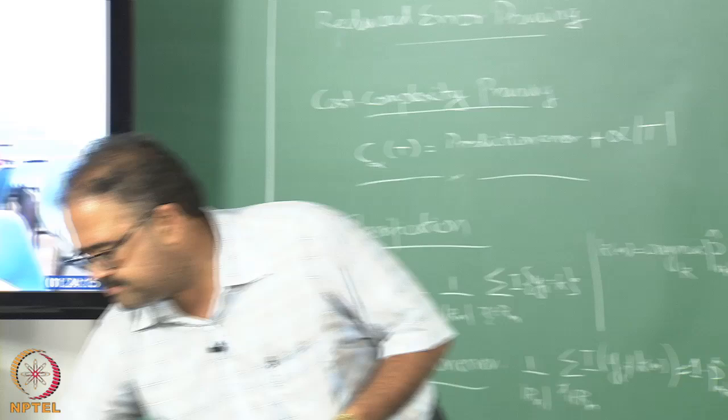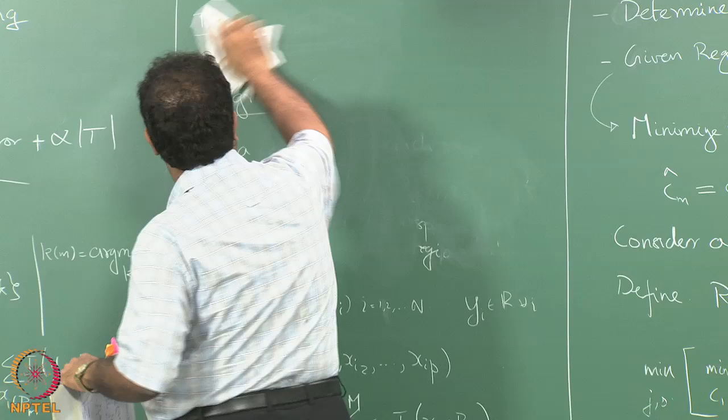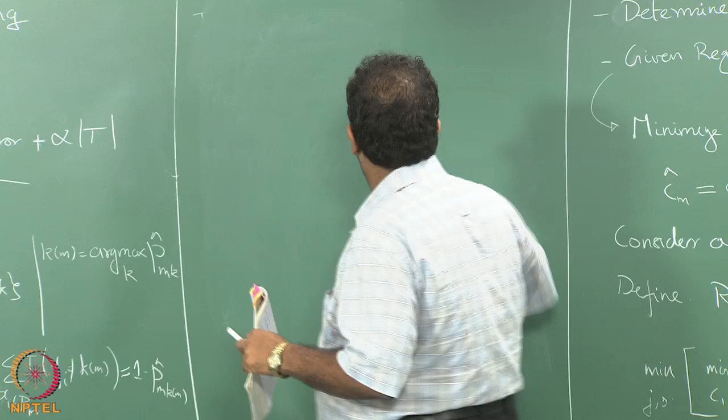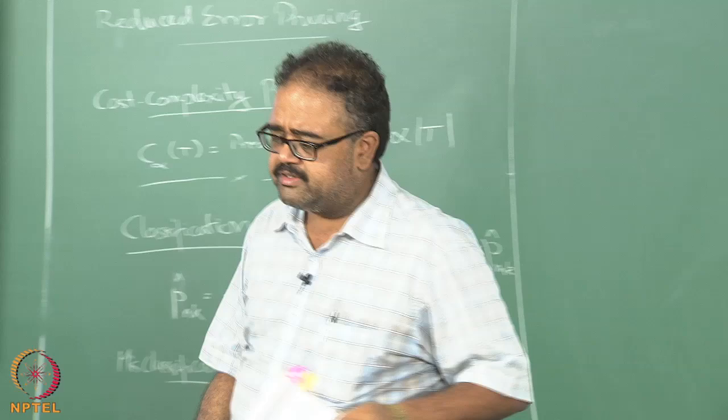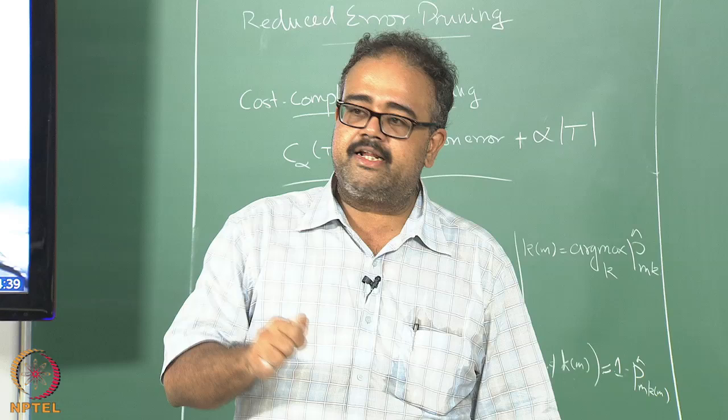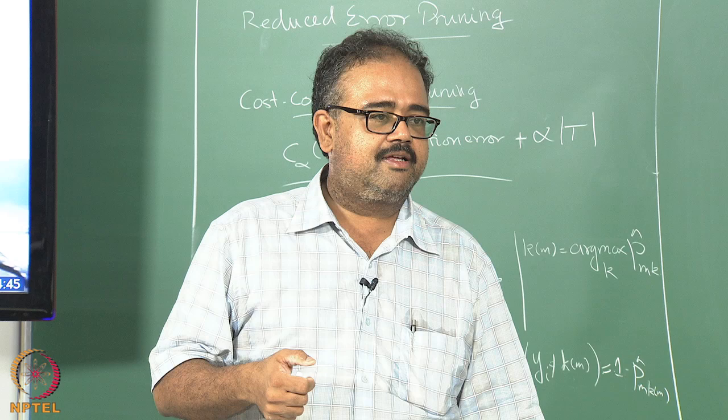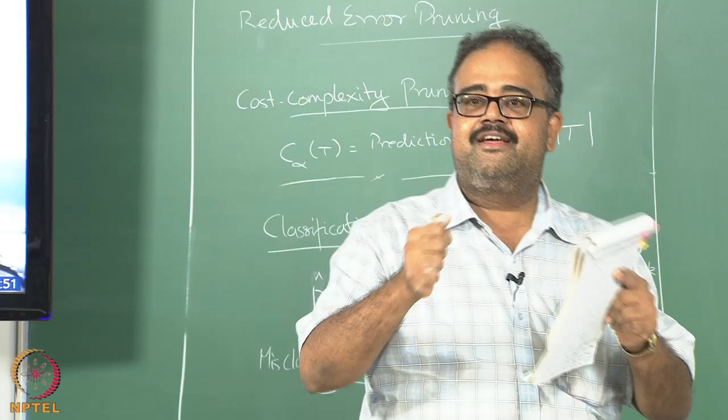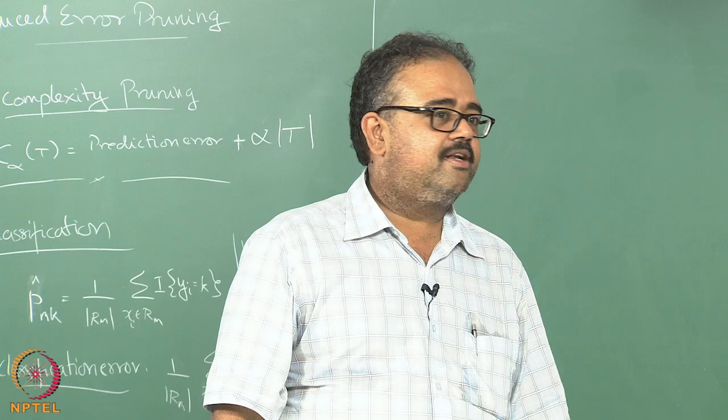One of the downsides of not being able to say anything theoretically formal about decision trees is that it leads to dogmas. There are two camps of people who are very sure about the right way to do decision trees and they just keep fighting each other. There are two very popular measures for doing classification using decision trees.